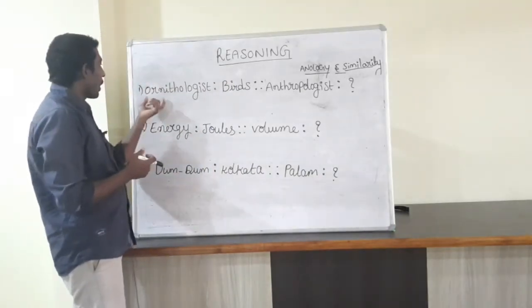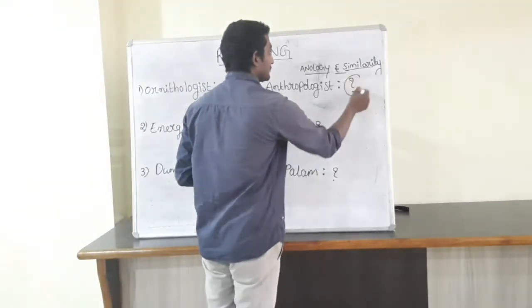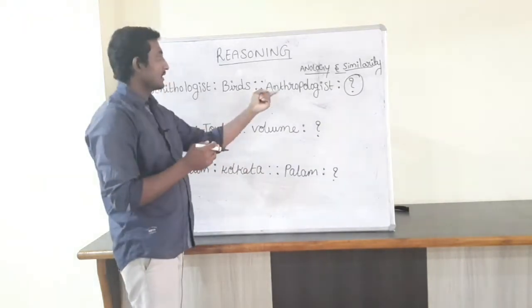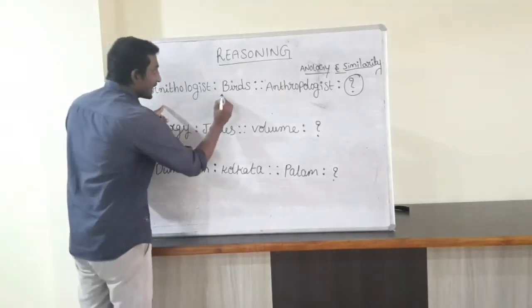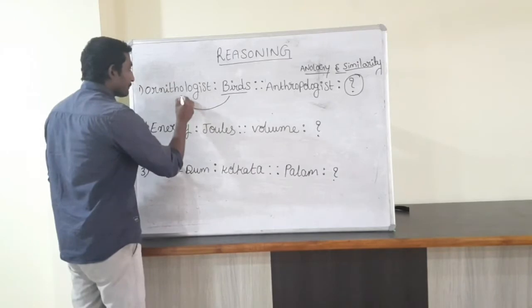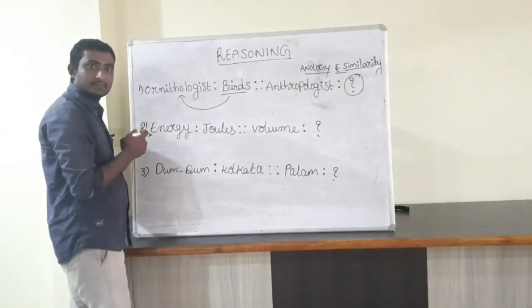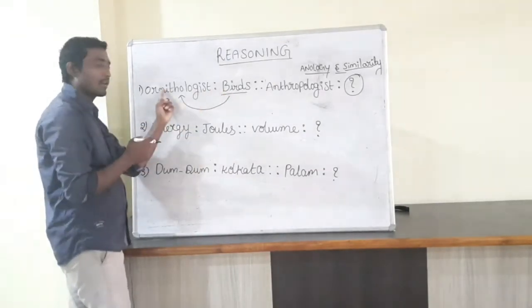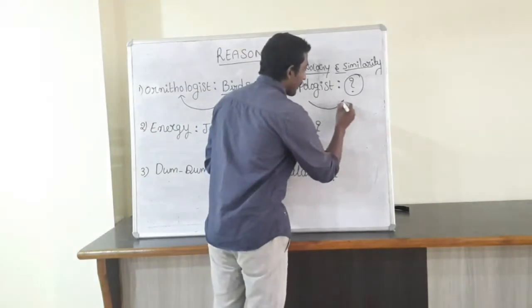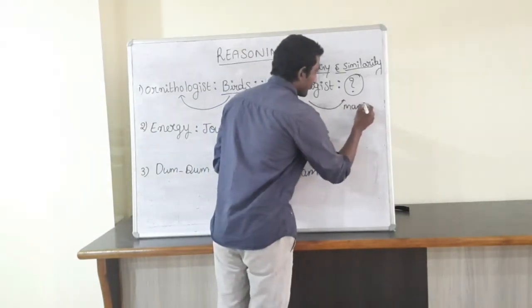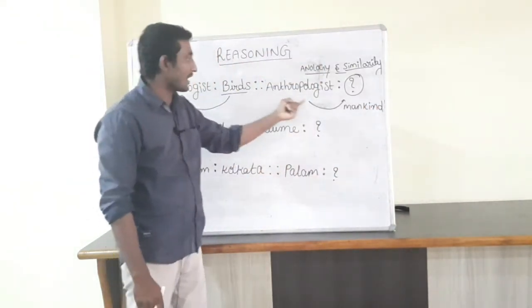See the first question. Ornithologist is to birds, anthropologist is to what? The study of birds is called ornithologist. Anthropologist means the study of mankind. The study of mankind is called anthropologist. So the answer is mankind.